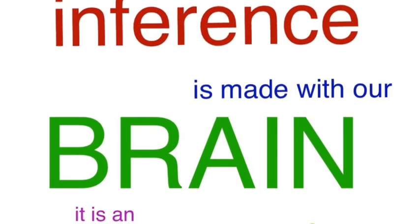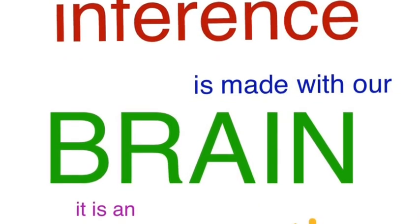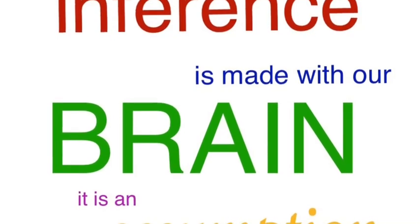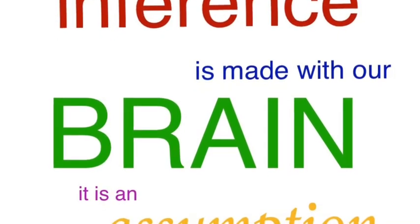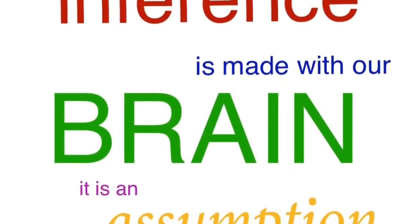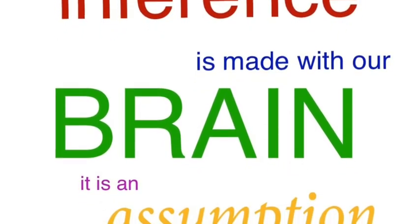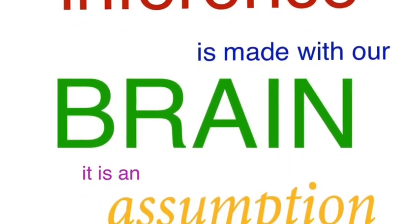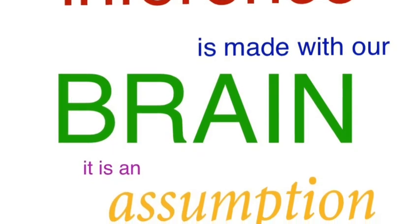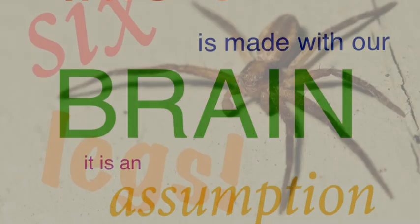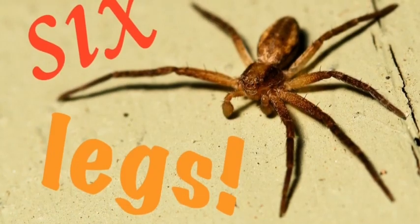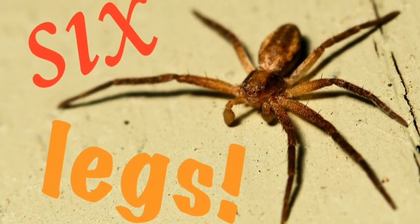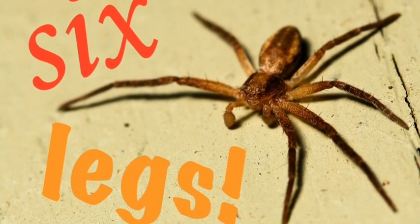In contrast, an inference is made with our brain. It takes all of those observations that we made with our senses, puts them together, and we make assumptions about it. We say, hey, this thing's got six legs, so it must be an insect.